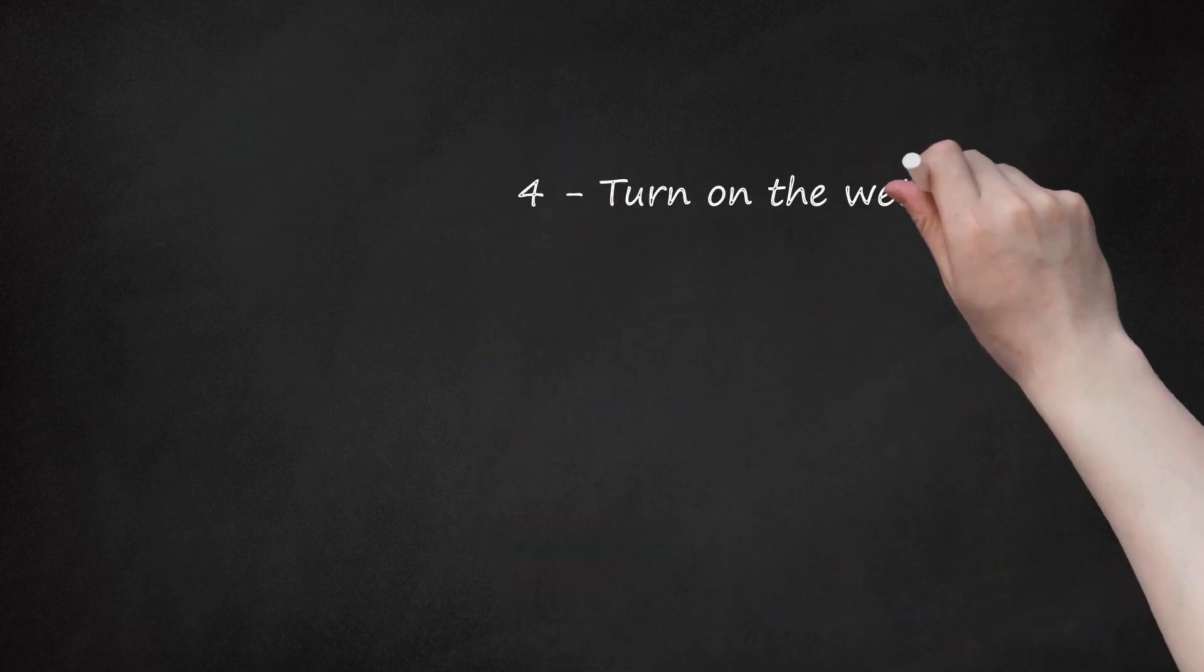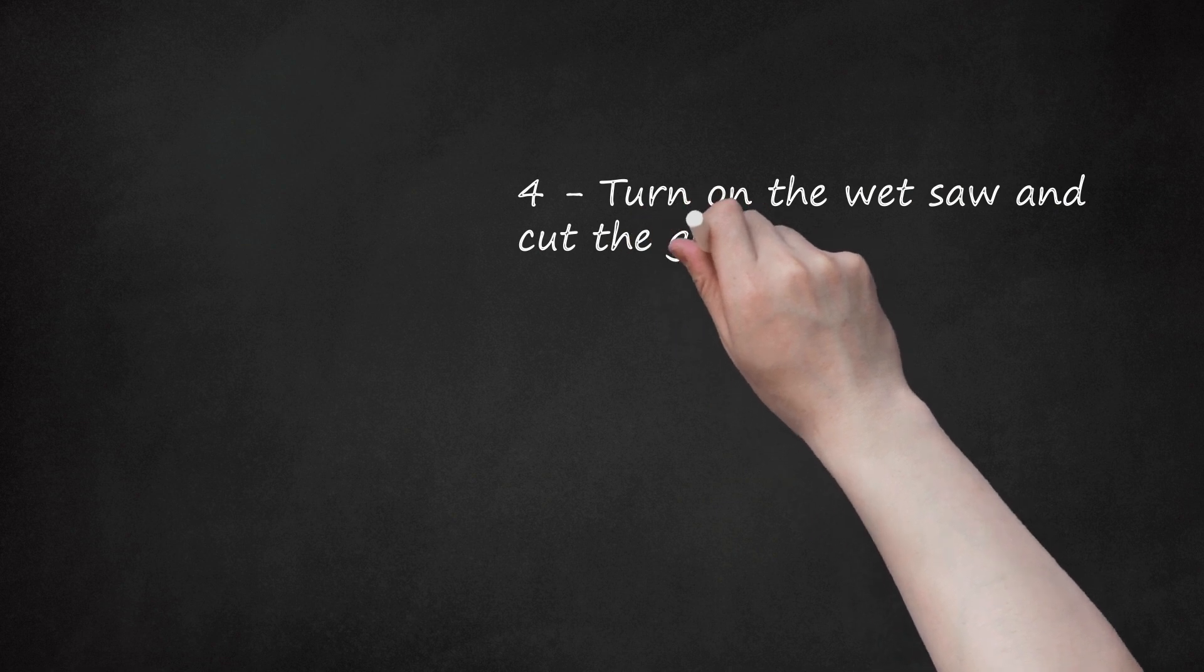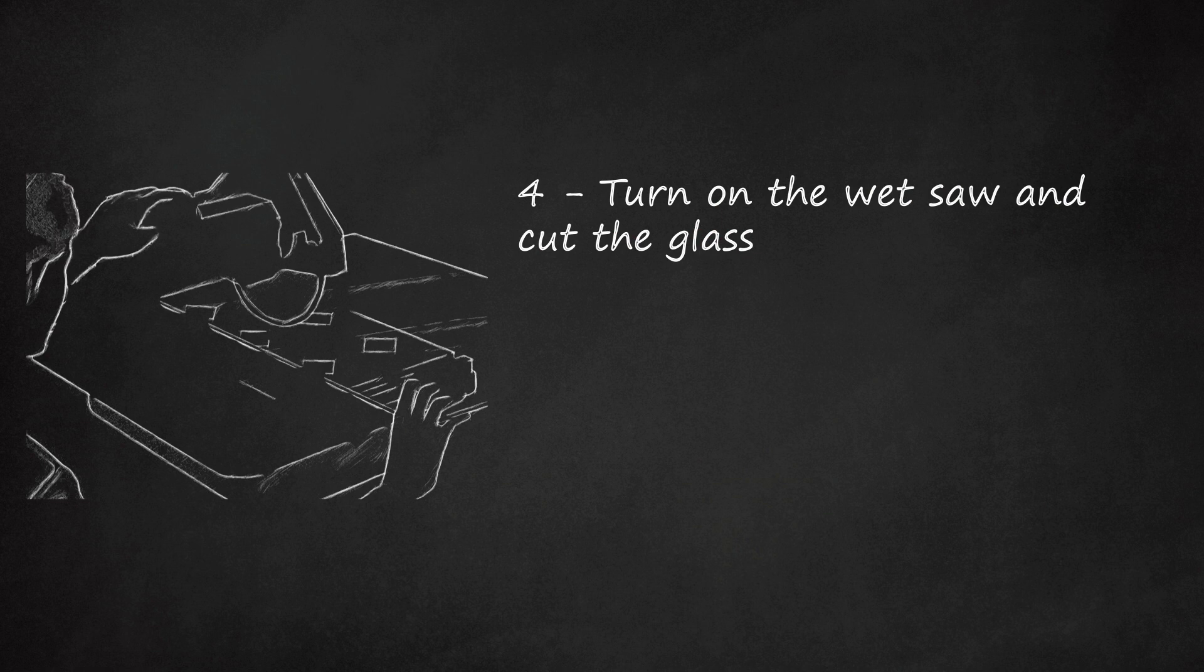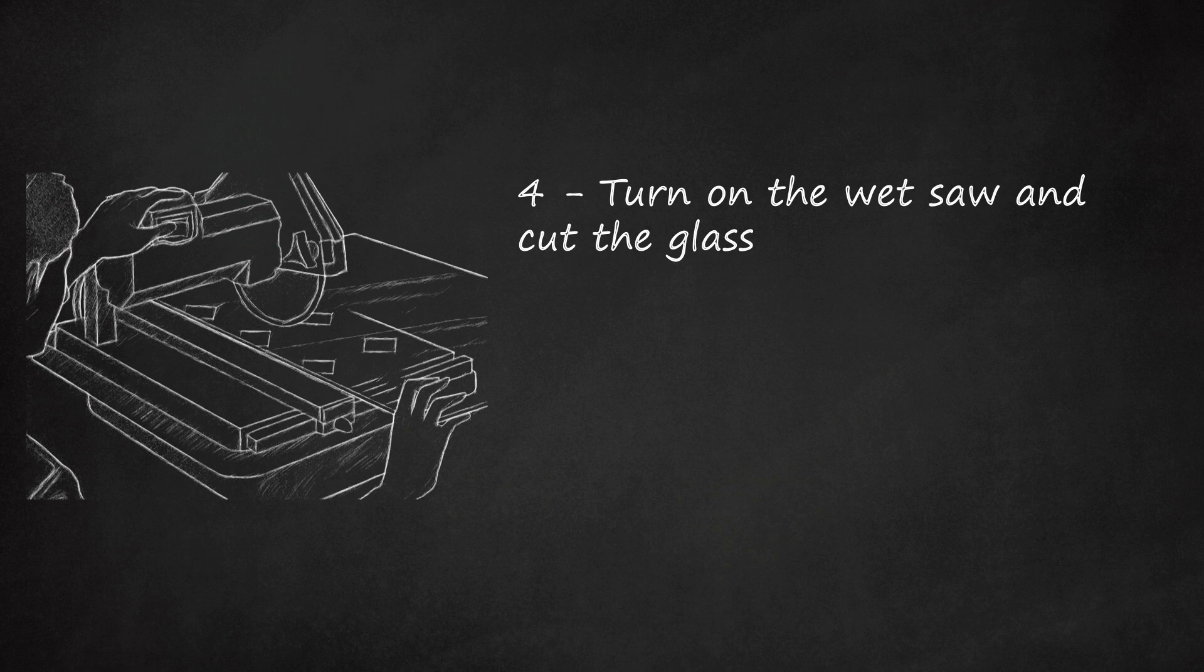Turn on the wet saw and cut the glass. Using light pressure, gently push the glass towards the wet saw. Do not push the blade into the glass, as this will result in a messy cut. Push the glass slowly, lightly, and steadily against the blade. Continue until the blade has cut the glass along the entirety of the cut line you drew on the glass. Move on to the next cut line and continue.